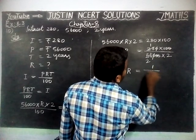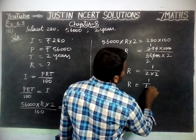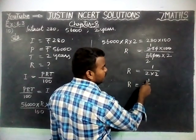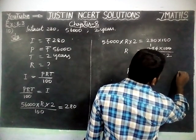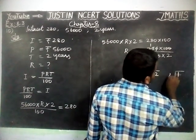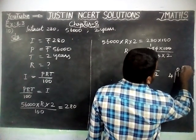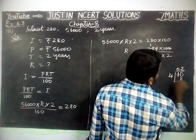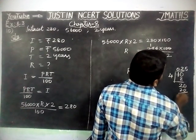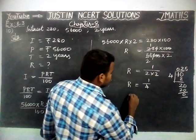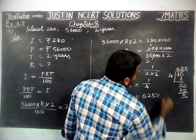R is equal to 1 divided by 2 × 2, which is 1 divided by 4. Since 1 is not divisible by 4, we convert to decimal: 1 ÷ 4 = 0.25. Therefore, the rate of interest R is equal to 0.25%.